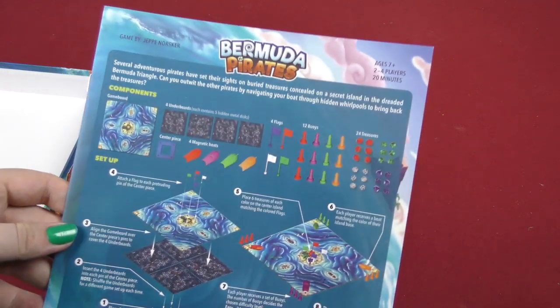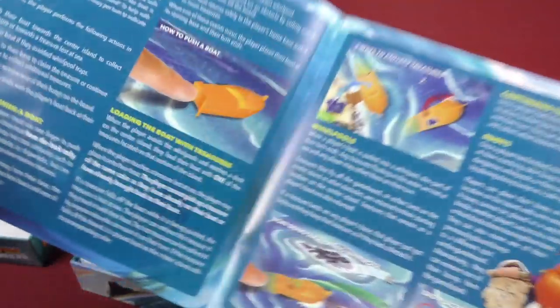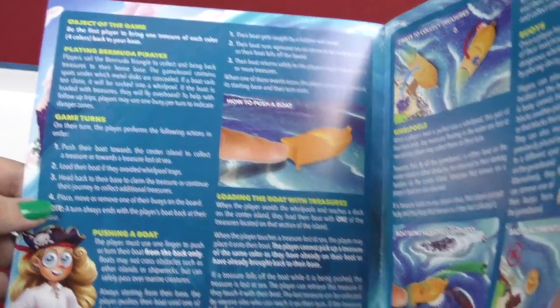Here we got the rules, which show the components up here, like the board, object of the game, game turns.